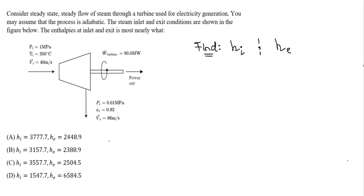We can determine these values using the steam tables. We can easily determine the enthalpy at the inlet using the pressure and temperature that's given. For the exit, it's going to be more involved because we are not given a temperature — we are given a quality. The quality at the exit, x, is 0.92. Let's first start with determining the enthalpy at the inlet. We can refer to the superheated tables.